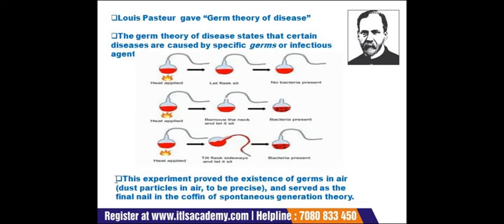The germ theory of diseases states that certain diseases are caused by specific germs or infectious agents present in the environment. Pasteur proved this using a swan-neck flask experiment: he heated media in the sealed flask and found no bacteria grew. When he cut the neck open and left the media for a few days, bacteria appeared. He proved experimentally the existence of germs in air, serving as the final nail in the coffin of spontaneous generation theory.